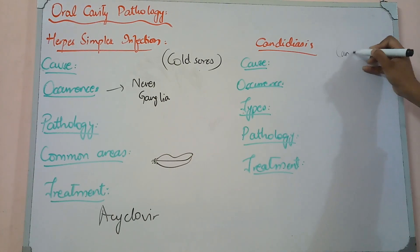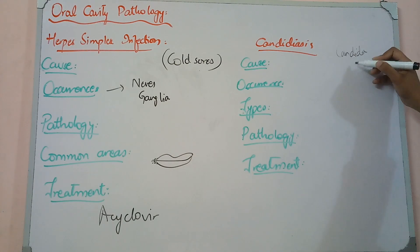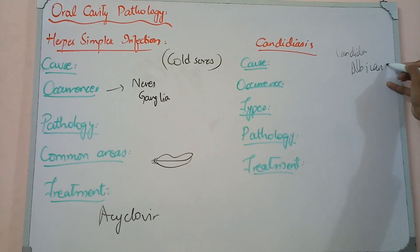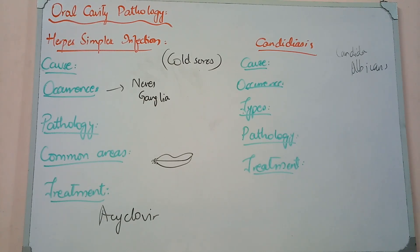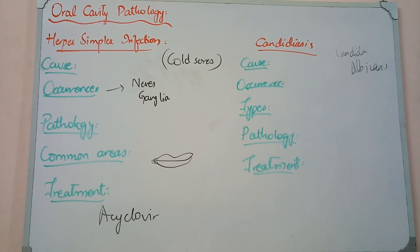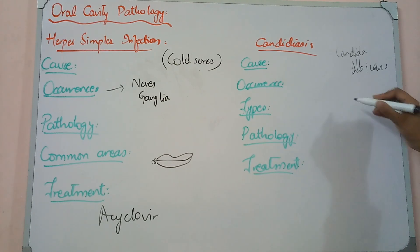The other condition is candidiasis. Candida albicans is a normal flora of the oral cavity. When the patient's immunity becomes low, or if the patient is on antibiotics, Candida albicans activates in the mouth, which we call oral thrush.